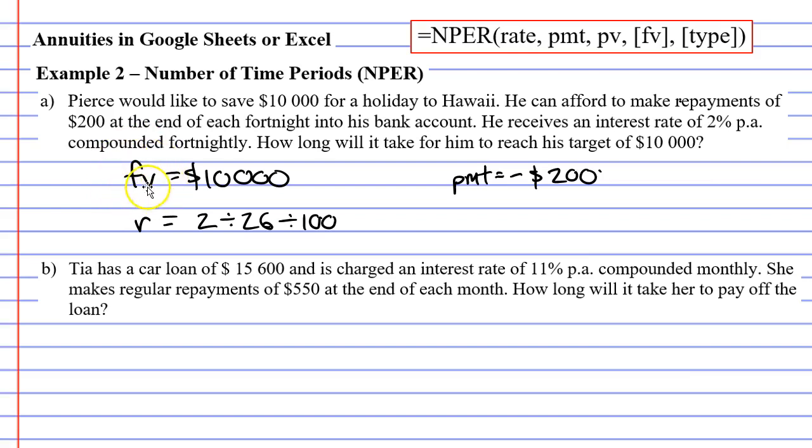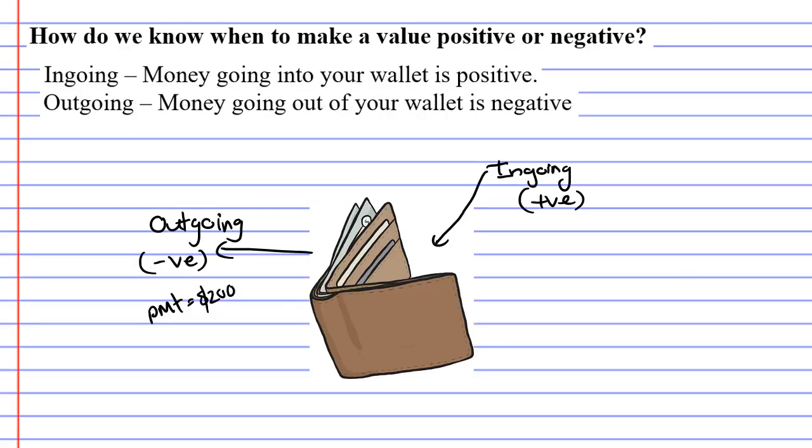What about our future value? Should this be positive or negative? When we look at our wallet, it's neither outgoing nor ingoing. That $10,000 was not taken out of our wallet and is not being put in right now, but it will eventually be put into our wallet. So it's an ingoing, it's going to be positive.